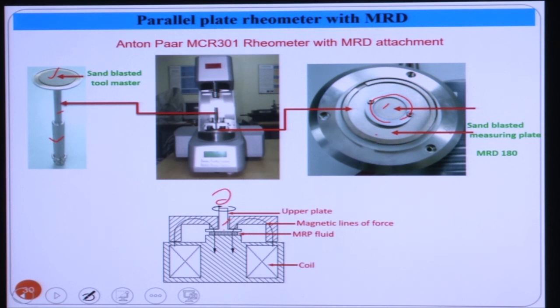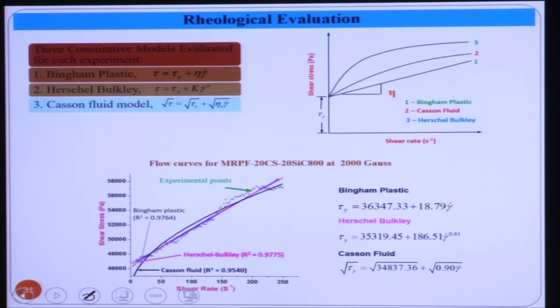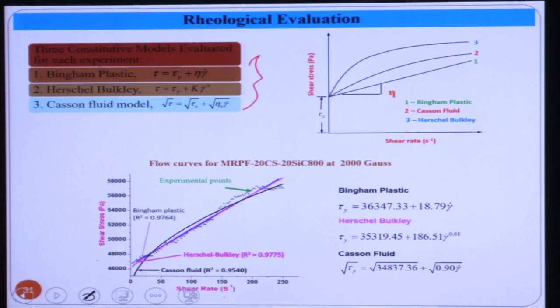At different shear rates, different shear stress values are obtained and plotted. These points are fitted using the three equations — Bingham plastic, Herschel-Bulkley, and Casson — for modeling magnetorheological fluid. After fitting, the R² value is calculated for all three equations. A total of 30 experiments were carried out.